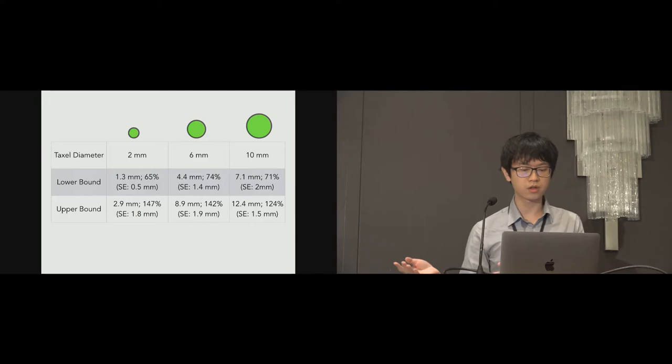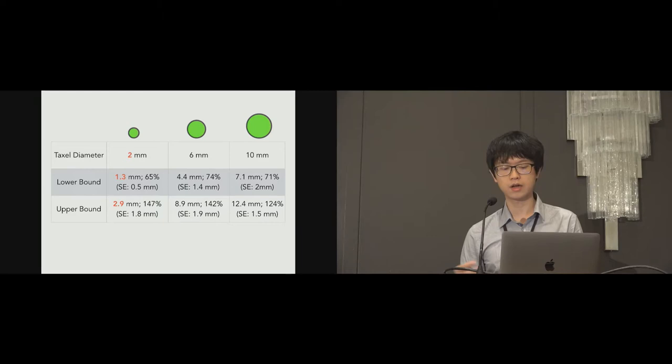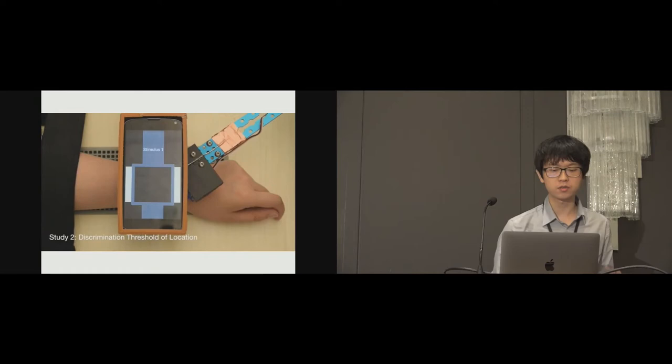This is the result. The result suggests that a taxel can simulate an object that is bigger or smaller than its actual size without shattering the illusion. For example, a 2-millimeter taxel can simulate an object as small as 1.3 millimeters or as large as 2.9 millimeters. These results also suggest the limitation of low-resolution shape-changing displays.